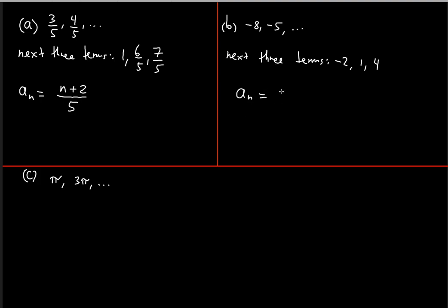For the nth term formula: the common difference is three, so three needs to multiply n. When n equals one that's three, when n equals two that's six — but when n equals one, three does not equal negative eight. It looks like we're shifting far left on the number line. The expression 3n satisfies the condition that any two adjacent terms have a common difference of three.